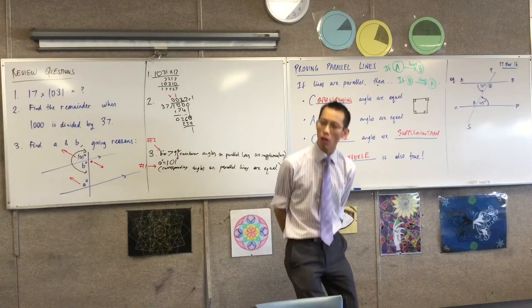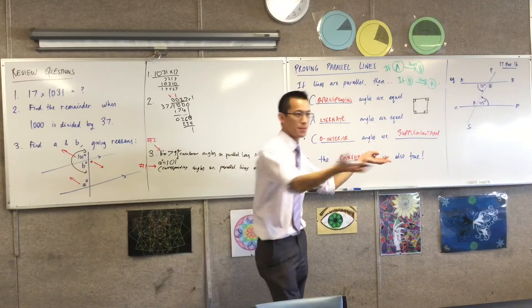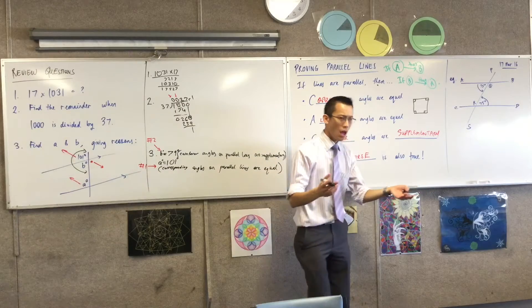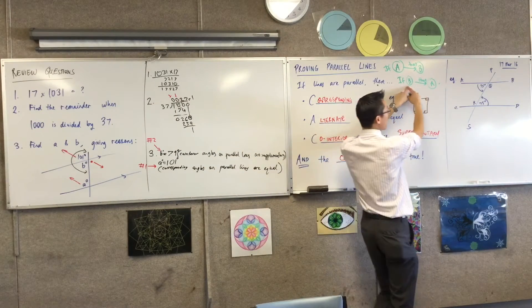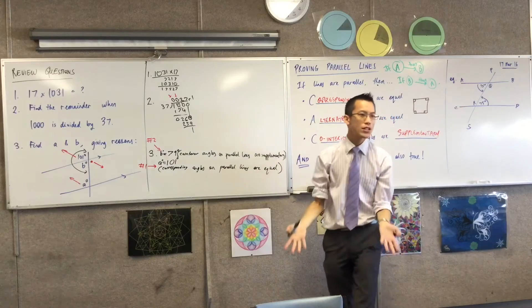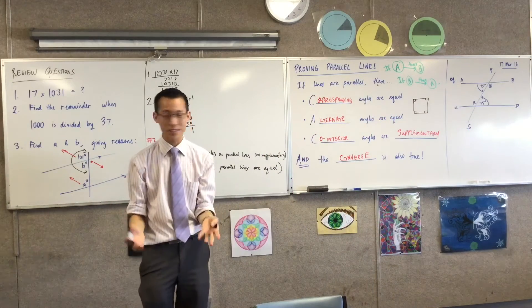What would the converse of that statement be? Rather than if it's a square, then it's also a rectangle, what would the converse be? If it's a rectangle, it's also a square. So if I reverse these and say it, if it's a rectangle, then it's a square, obviously that's not true anymore, is it? The converse often is not the case.